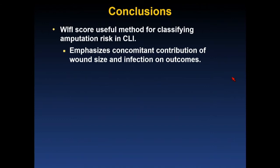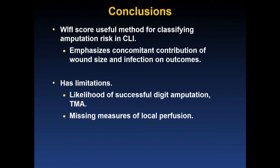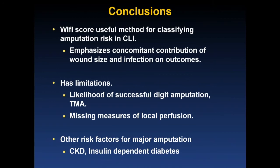In conclusion, the WIfI score is a useful method for classifying amputation risk in critical limb ischemia, emphasizing the contribution of wound size and infection on outcomes and reminding us that revascularization alone is not always the major determinant. However, it has limitations: likelihood of successful digit amputation or TMA is not included, and it misses measures of local perfusion such as angiosome supply and pedal arch patency. Other important risk factors — critical chronic kidney disease, dialysis, and insulin-dependent diabetes — are also not captured. The WIfI score is one part of the overall risk spectrum among patients with critical limb ischemia.